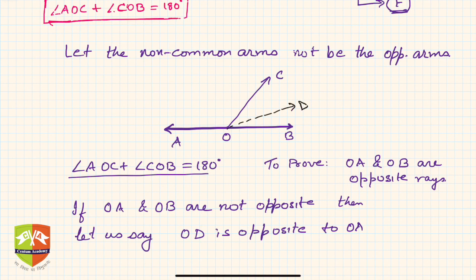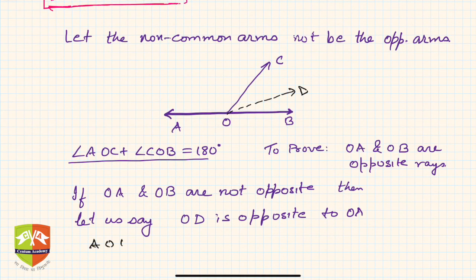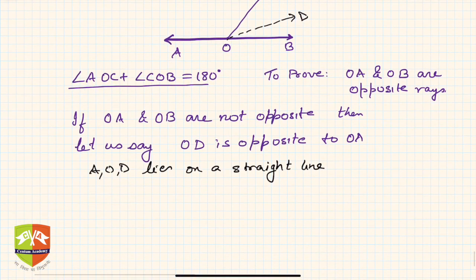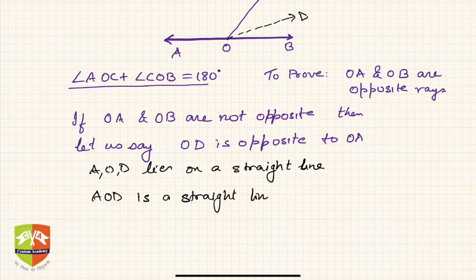Don't go strictly by the figure — just to prove it for argument's sake: if OB is not opposite to OA, then there must exist another ray OD which is opposite to OA. So OD is opposite to OA, which means A, O, and D all lie on a straight line. Now OC stands on line AOD.